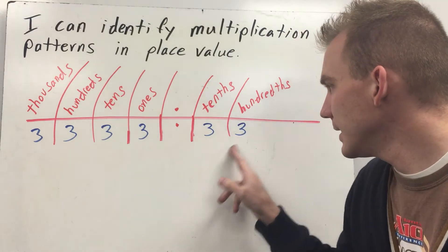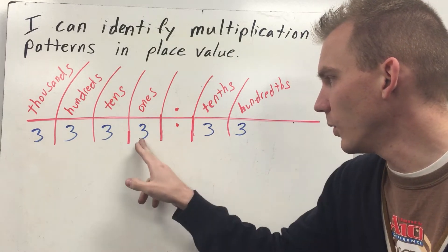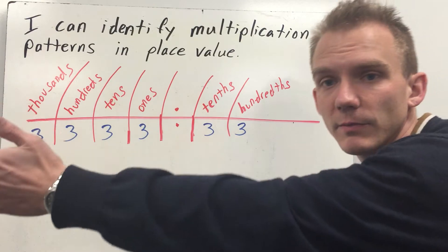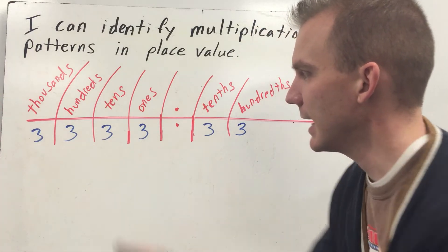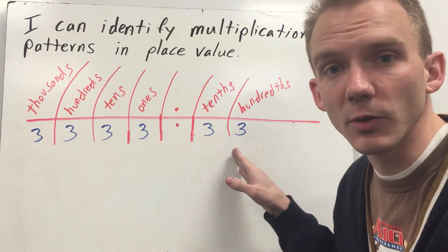Basically, the way place value works is that each place value, every time you go from one to the next, if you go to the left, you're multiplying by ten or you're dividing by ten going to the right.